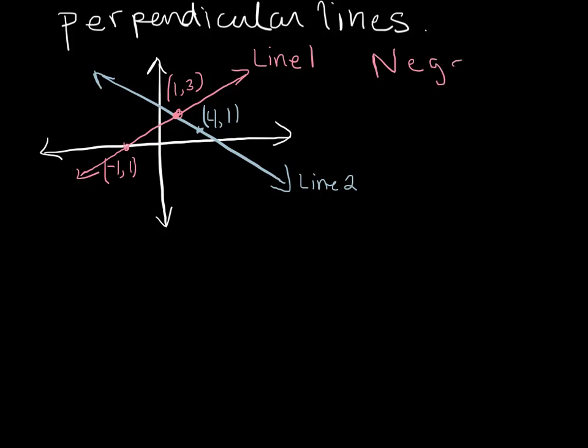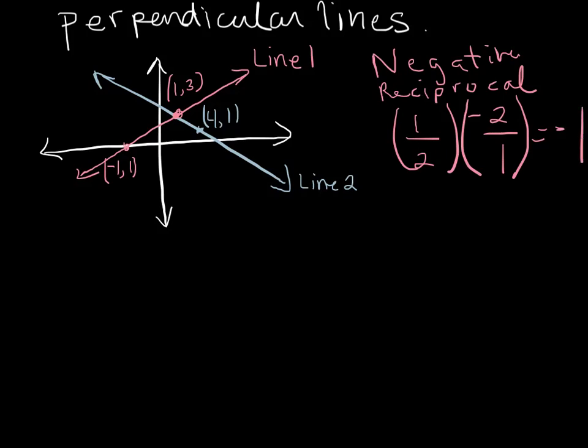So a negative reciprocal means basically, for example, let's say we have two fractions, so let's say 1/2. The negative reciprocal of that is going to be negative 2 over 1. So they're not equal. You basically take the fraction, flip it and put a negative sign in front of it and then you have a negative reciprocal. Another interesting fact about negative reciprocals is if you take the two numbers and multiply them together you end up with a result of negative 1. So that's another way that you can show it.